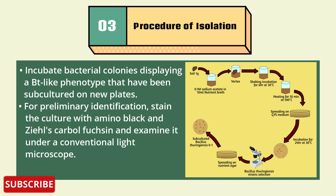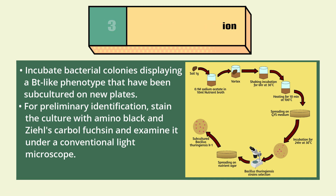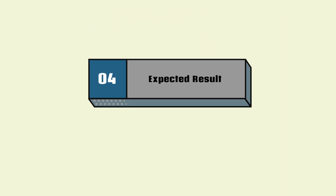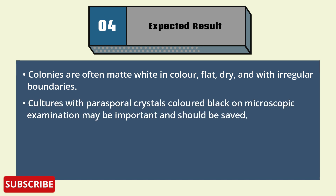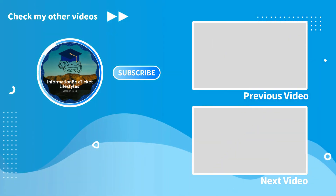For the Bacillus thuringiensis isolation expected results: colonies are often matte white in color, flat, dry, and with regular boundaries. Cultures with parasporal crystals colored black on microscope examination may be significant and should be saved.